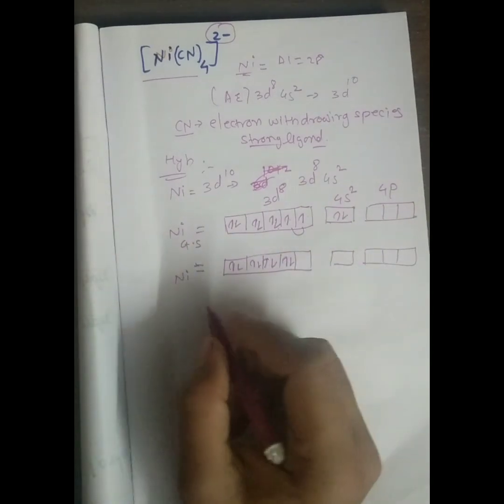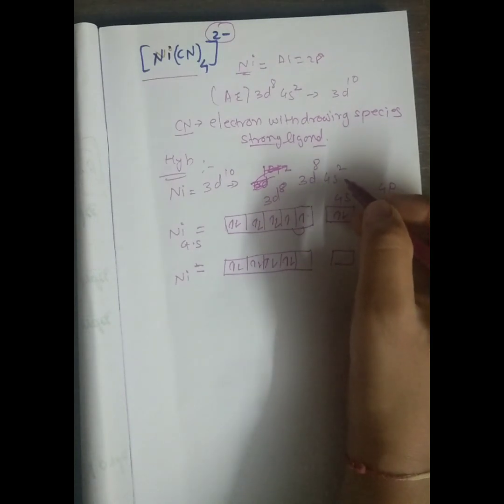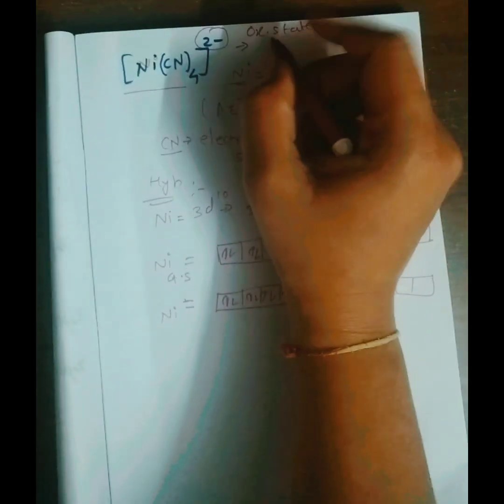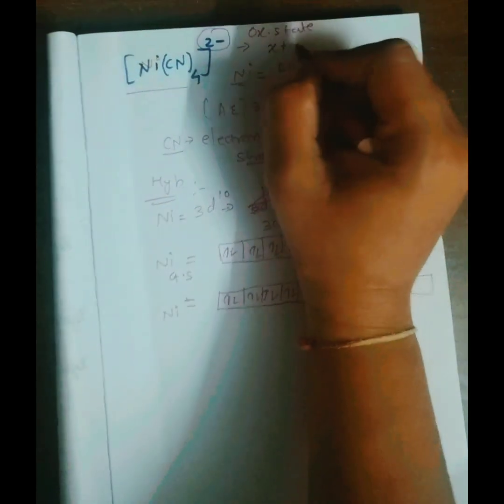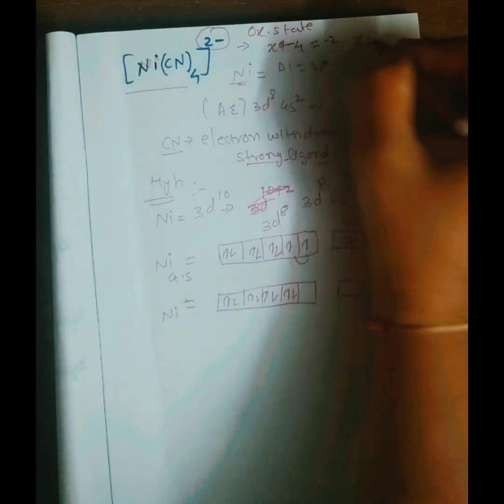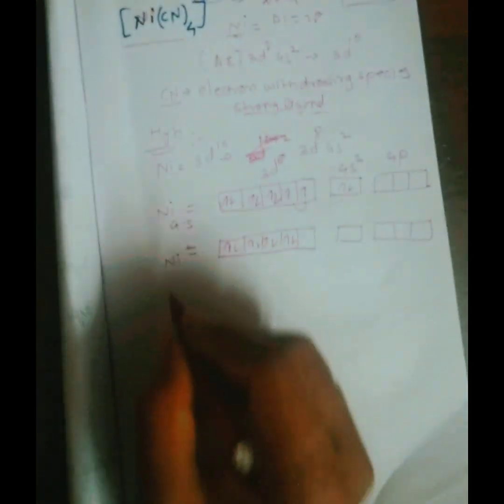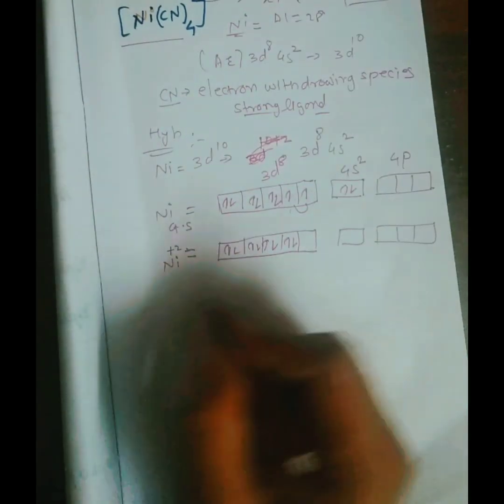Now the oxidation state. First of all calculate the oxidation state. Here the nickel, we can consider x, cyanide 4, that is 4 minus. So this is x minus 4 equals minus 2. After the calculation we get the +2 oxidation state. So nickel has +2 oxidation state, so we can say that nickel is in +2 oxidation state.